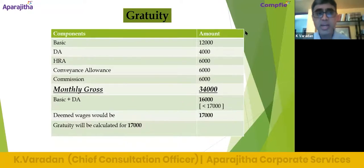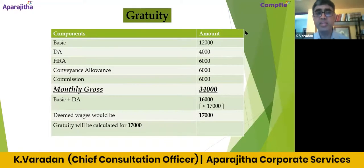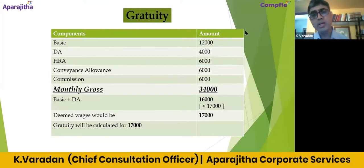Gratuity. Basic, DA, HRA, Conveyance allowance, and Commission — five components are there: 12,000, 4,000, 6,000, 6,000, 6,000, total comes to 31,000.